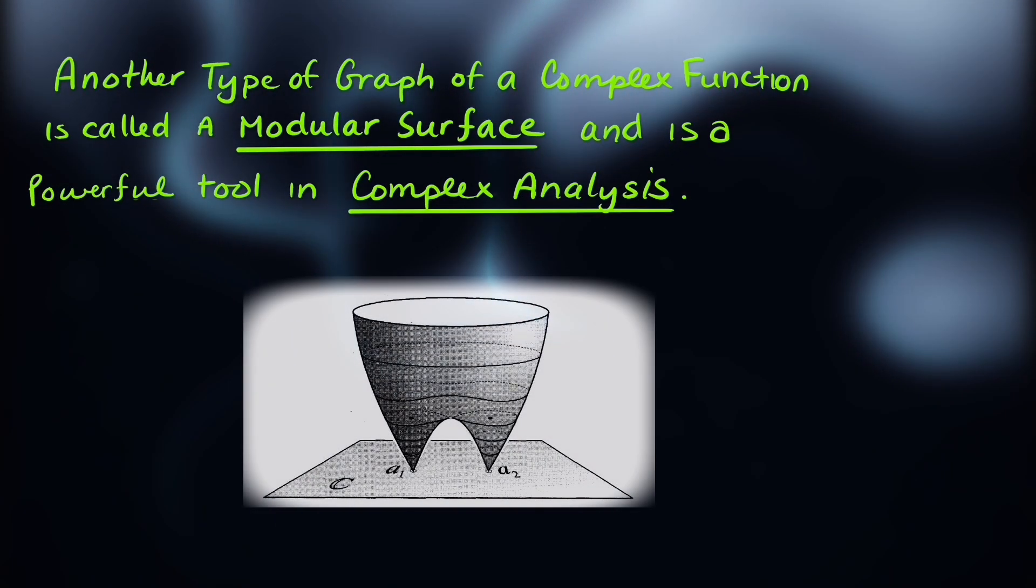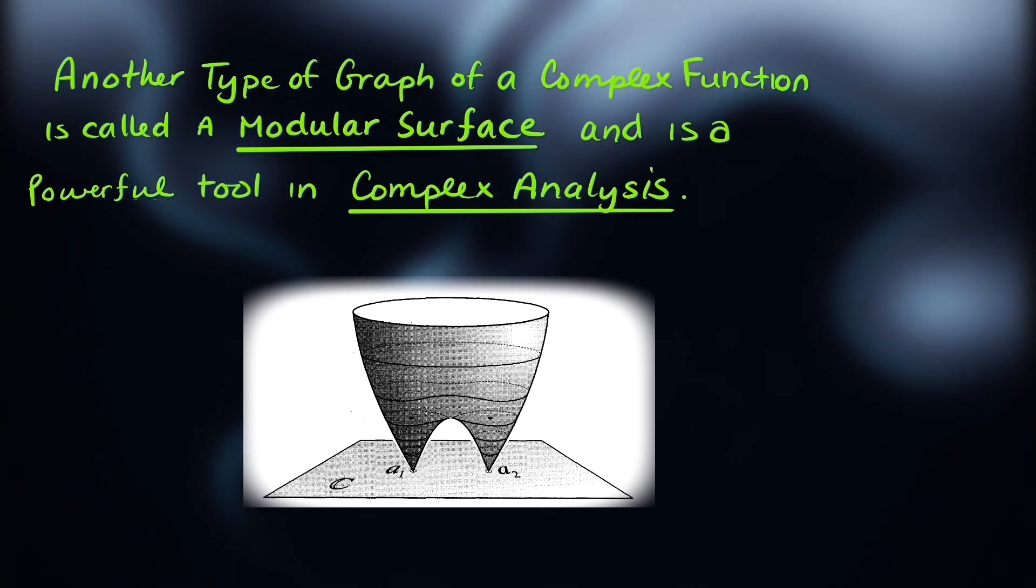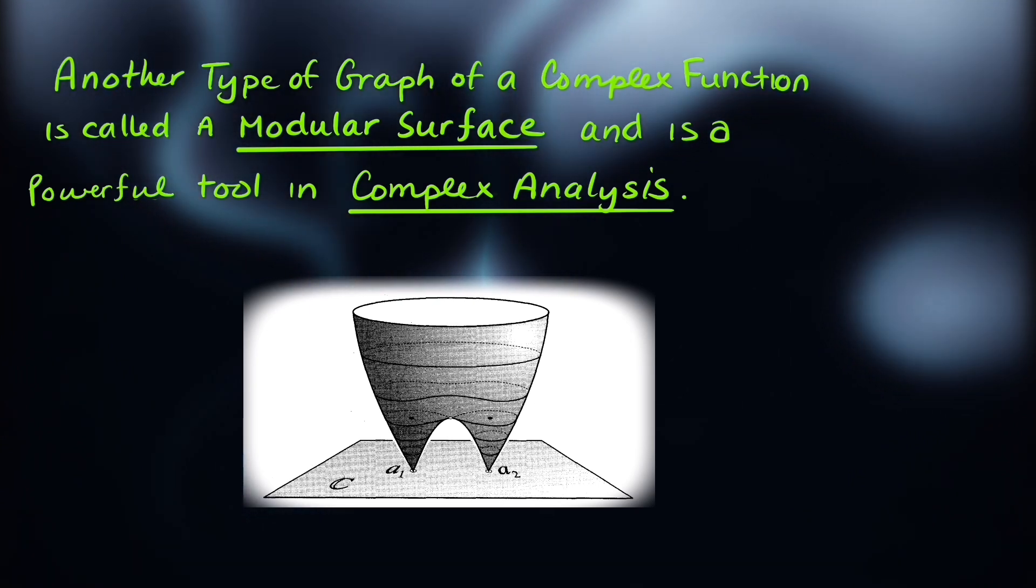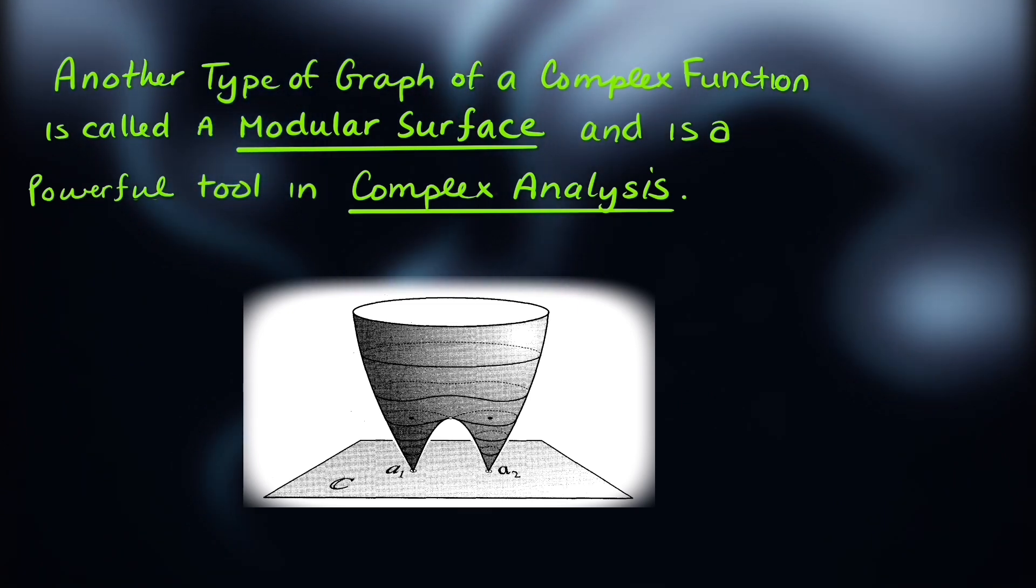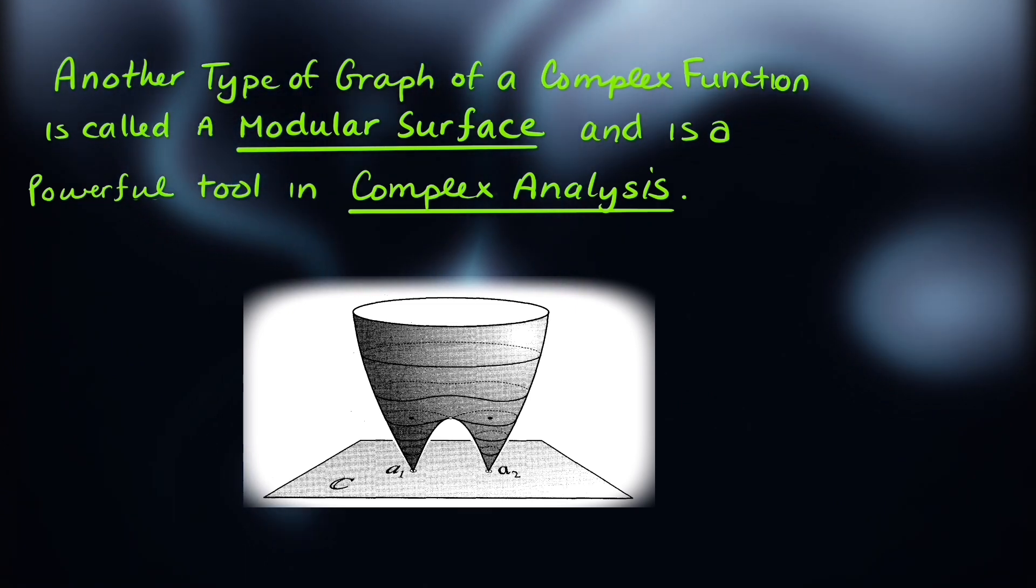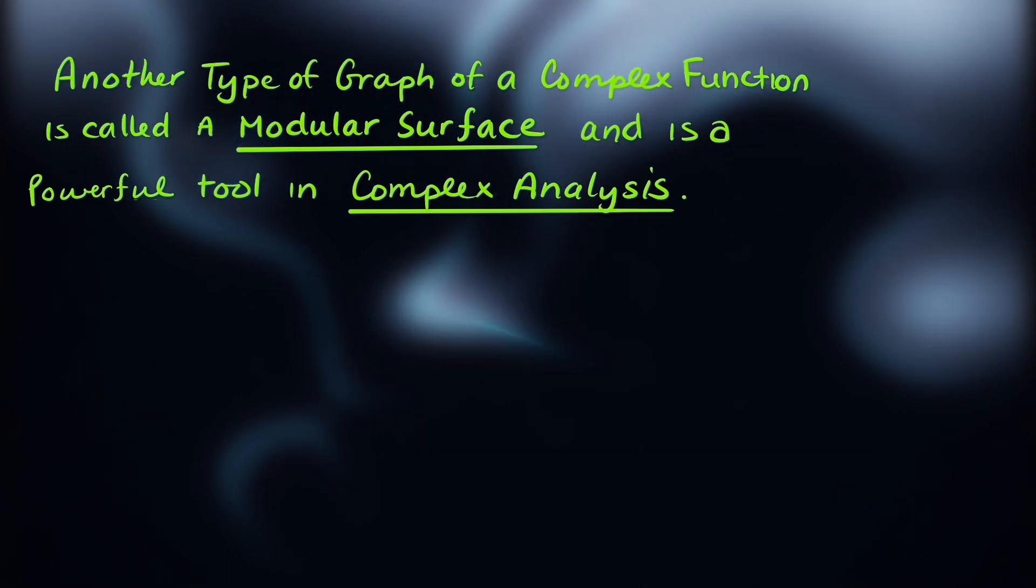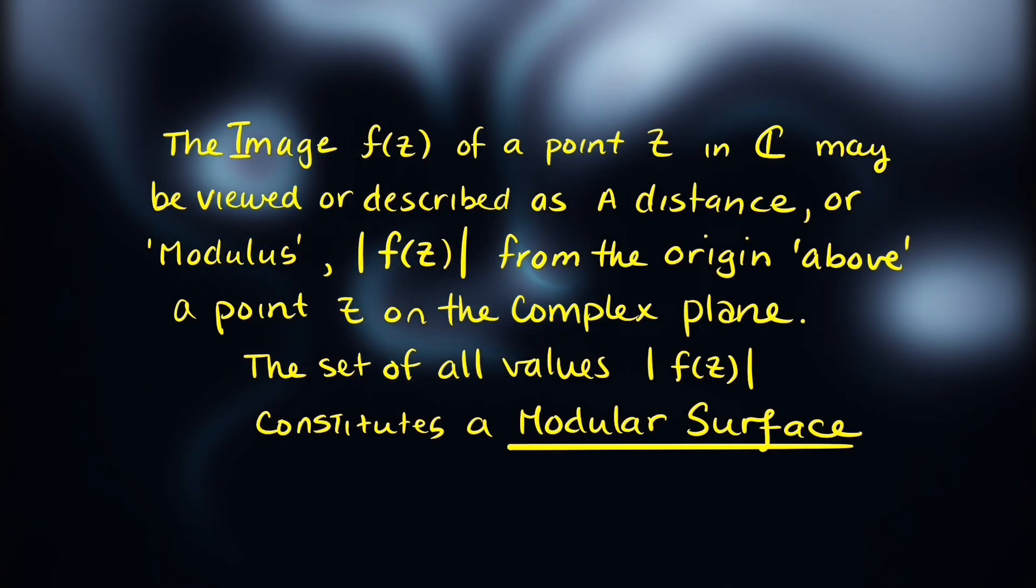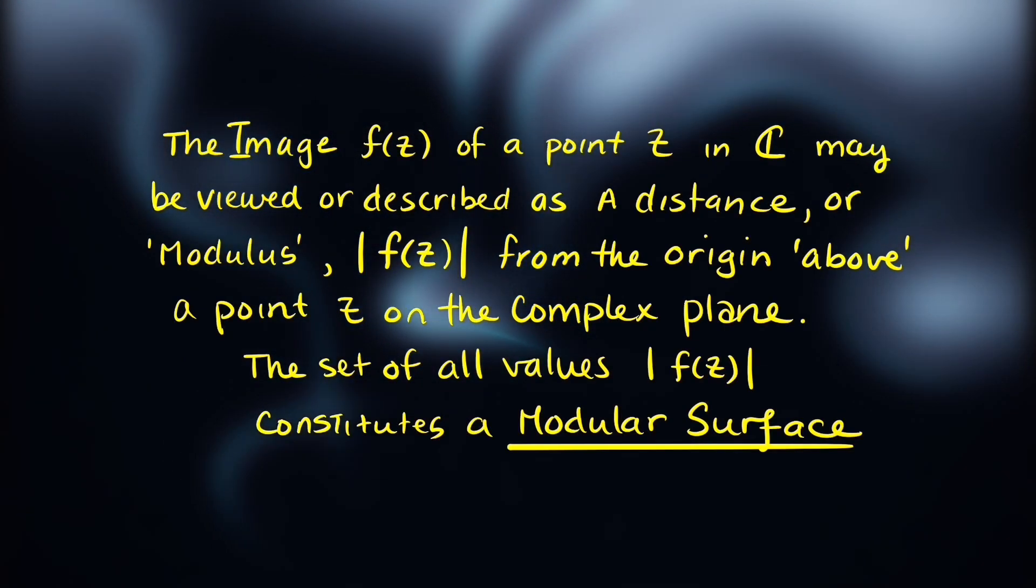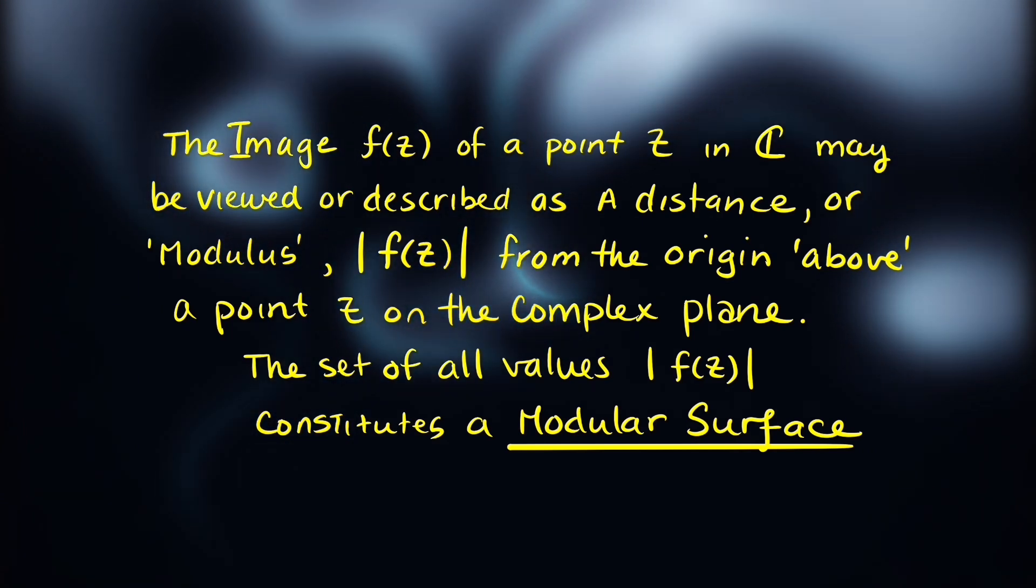Another type of complex function is called a modular surface and is a powerful tool in complex analysis. A modular surface takes f, a function of a complex variable, as an input. The image of f of a point z in the complex plane may be viewed or described as a distance or modulus.